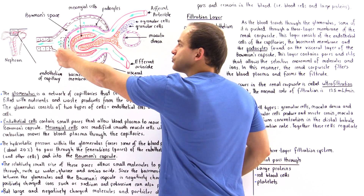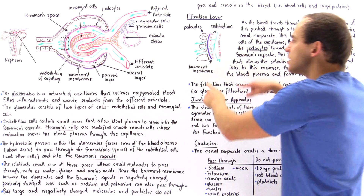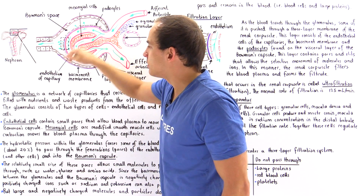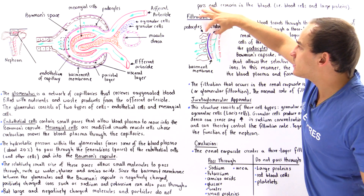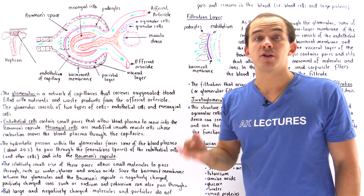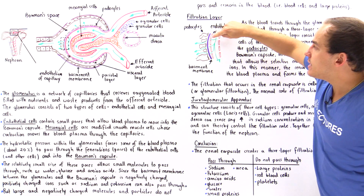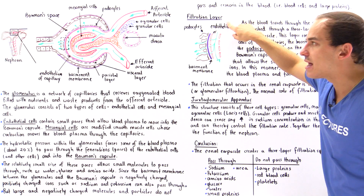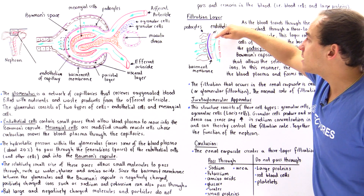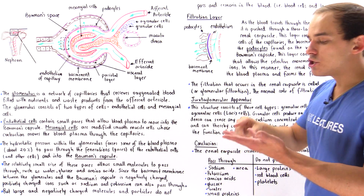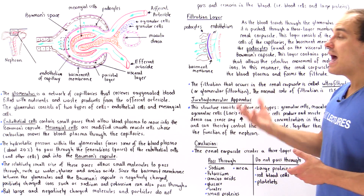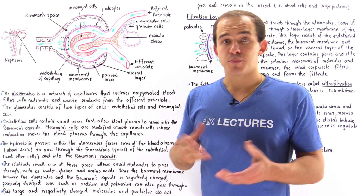Let's take a look at our filtration layer. If we take a cross section of this region, we get the following diagram. As blood travels through the capillaries of the glomerulus, we have a filtration membrane — a three-layer membrane. The endothelial cells of the blood vessels contain tiny pores that allow the movement of small molecules such as water, amino acids, glucose, and electrolytes such as sodium and potassium ions.